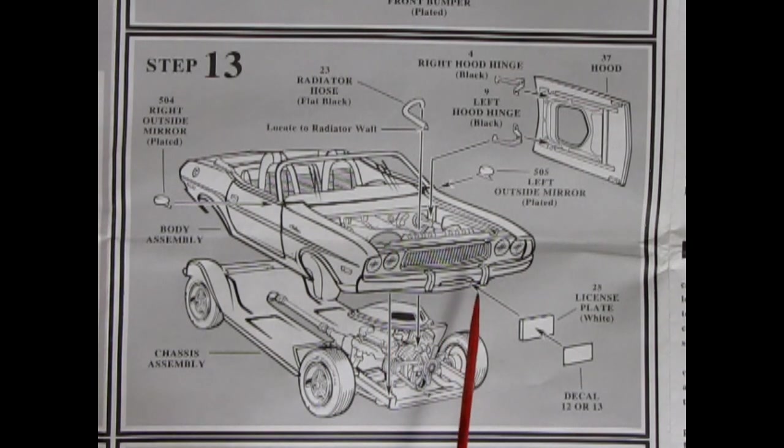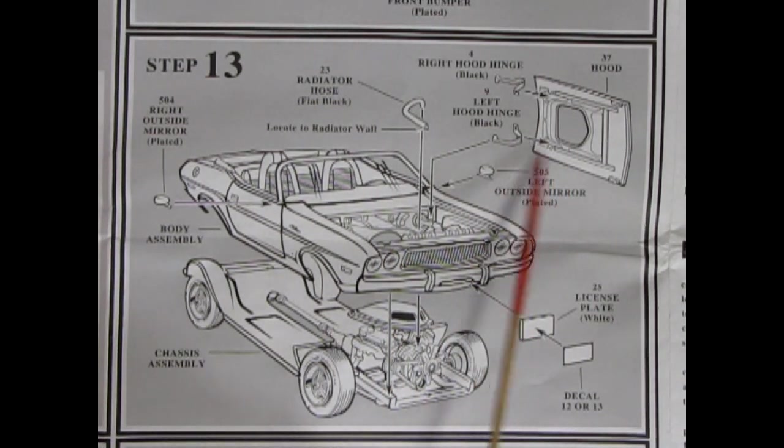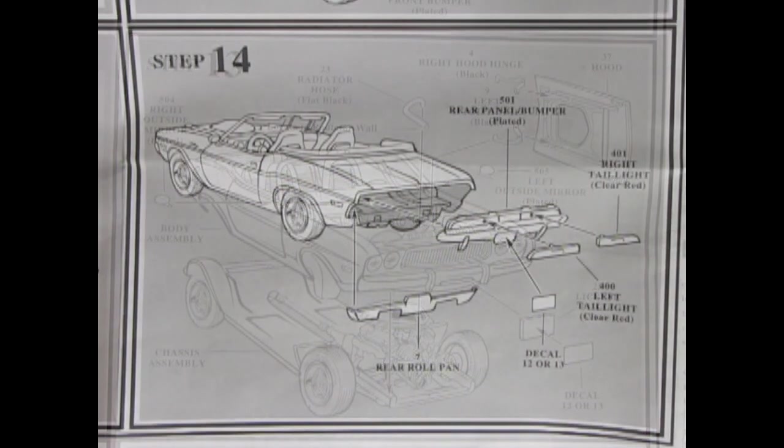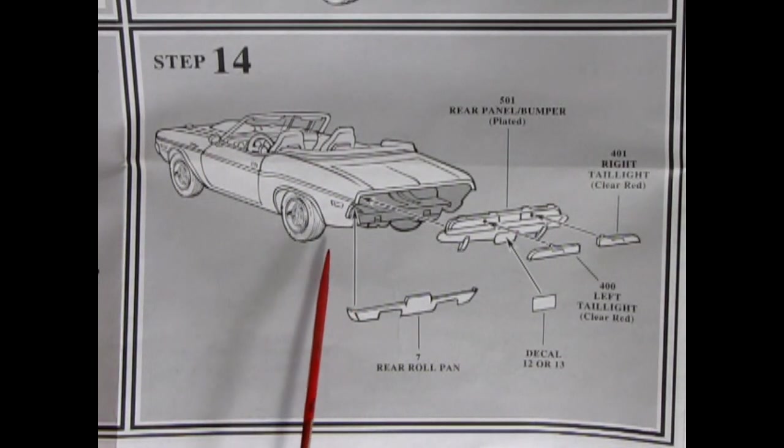There's our hood and our hood hinges, which glue underneath. And then we have our license plate and one of the decals going on there. Step 14 shows the rear of the car going together. So we've got our rear panel and bumper assembly pops in. There's a rolled pan, which we'll glue in along the bottom here. Our rear tail lights and our license plate.